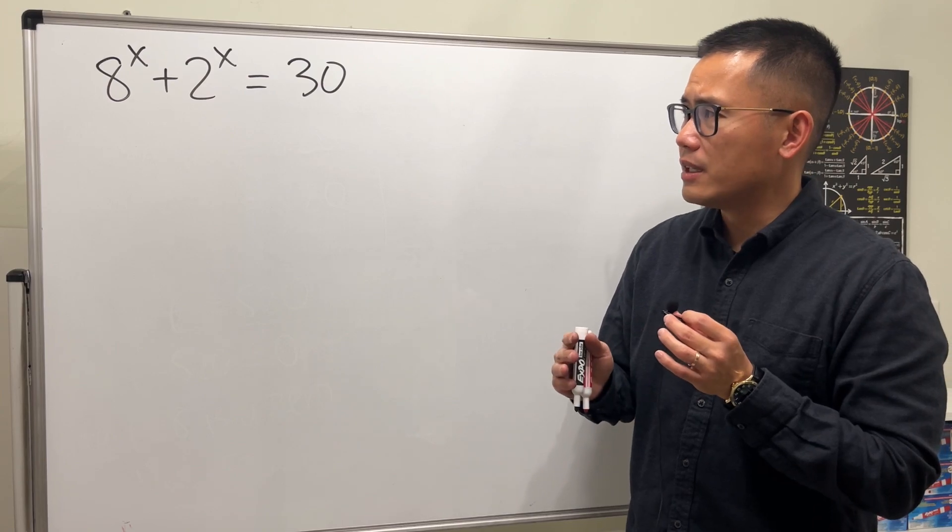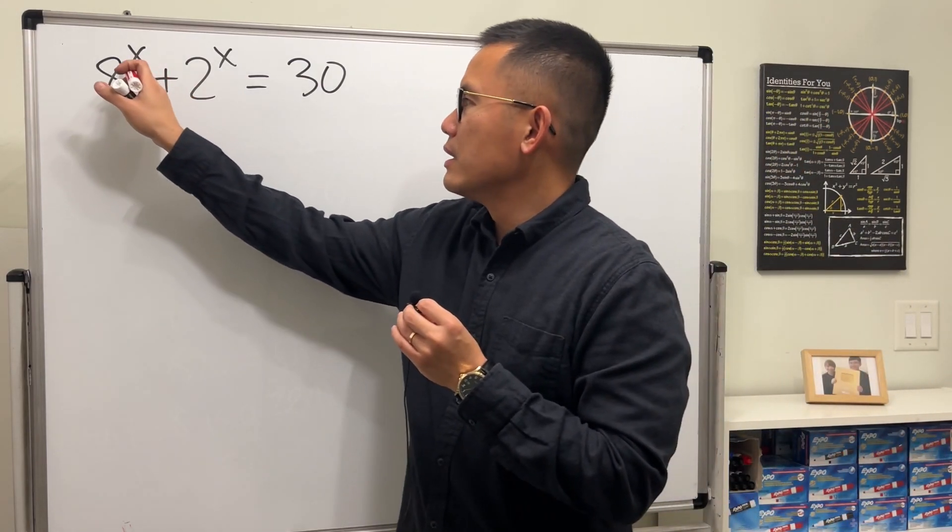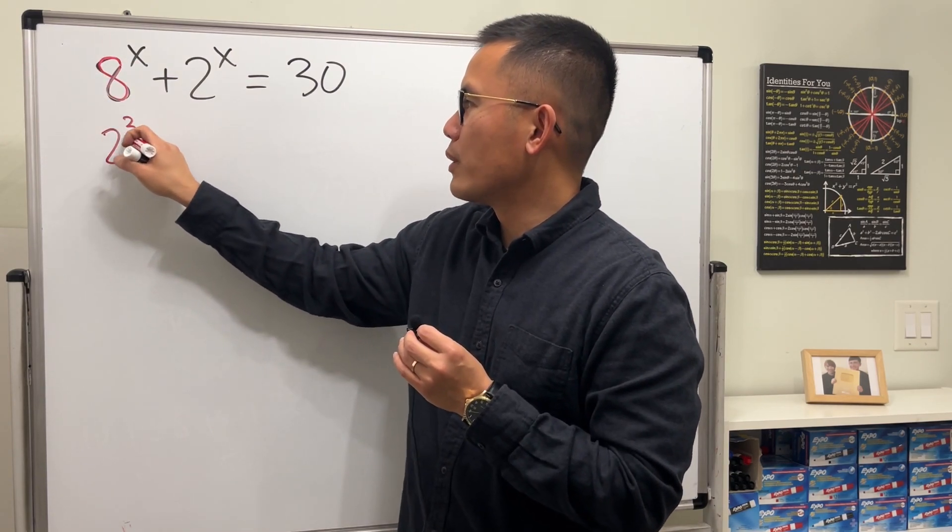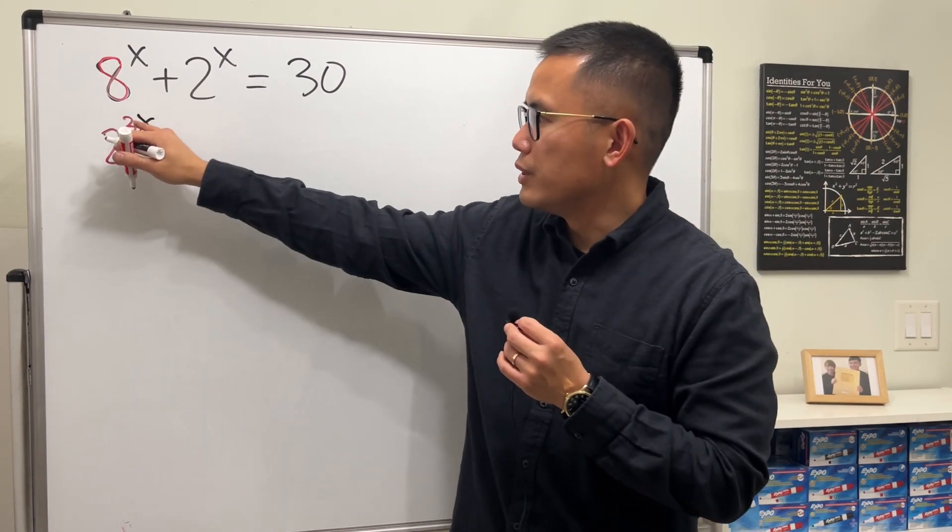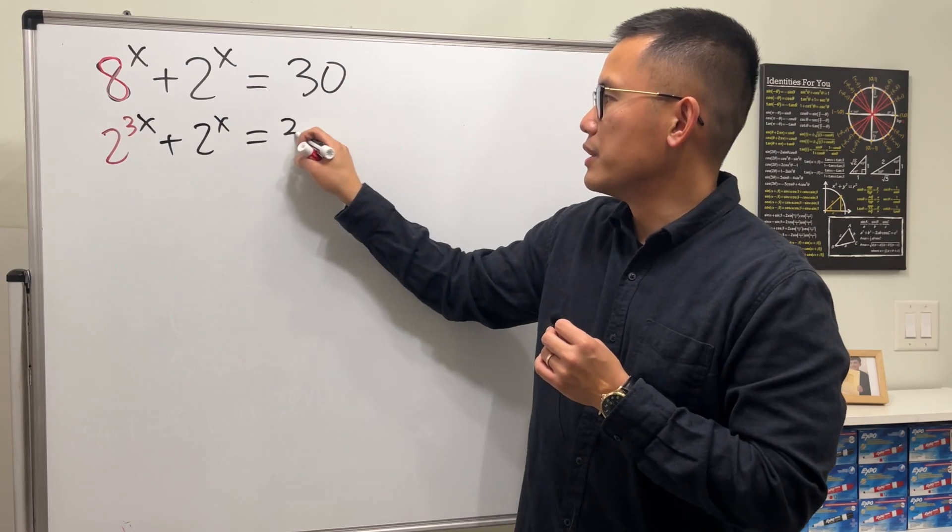Usually, we would like to make the base equal to each other, right? But if you do that, let's try. This is 8, we can write it as 2 to the 3rd power, and then raise to the x power, which is just the same as 2 to the 3x power, and then plus 2 to the x, and that's equal to 30.